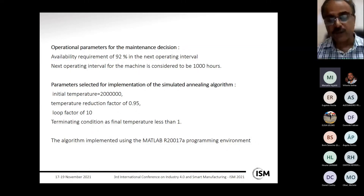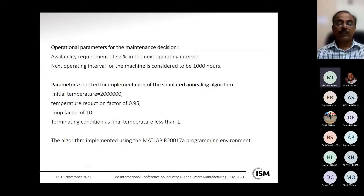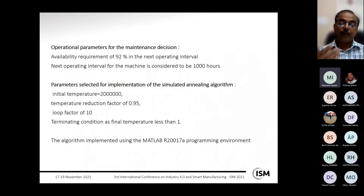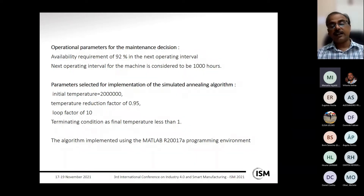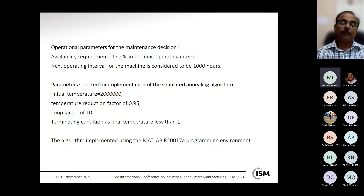The simulated annealing algorithm parameters selected are: initial temperature of 20 lakhs (2,000,000), temperature reduction factor of 0.95, and at each temperature level the maintenance decision is searched over 10 iterations (the loop factor). The termination condition is that iterations continue until the final temperature is less than five.